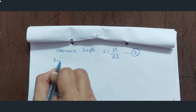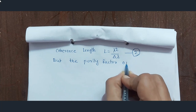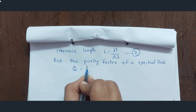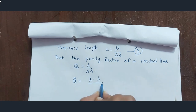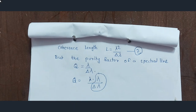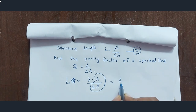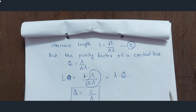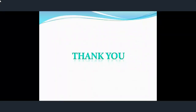From the definition of purity factor, Q is equal to lambda upon delta-lambda. From equation 2, lambda squared upon delta-lambda equals l, so lambda upon delta-lambda equals l upon lambda. Therefore, Q is equal to l upon lambda. This is the required result — the expression for the purity of a spectral line.